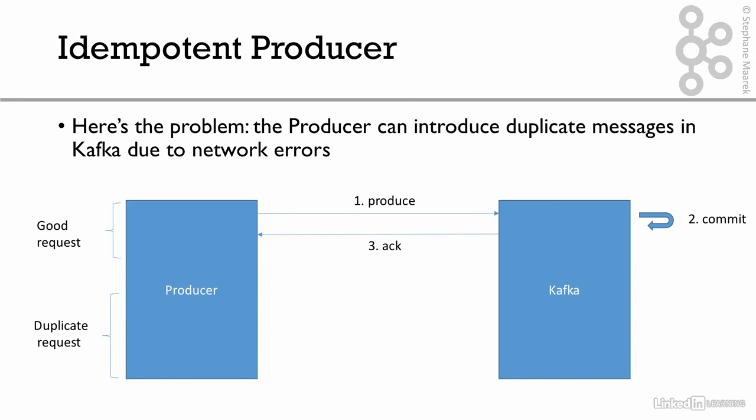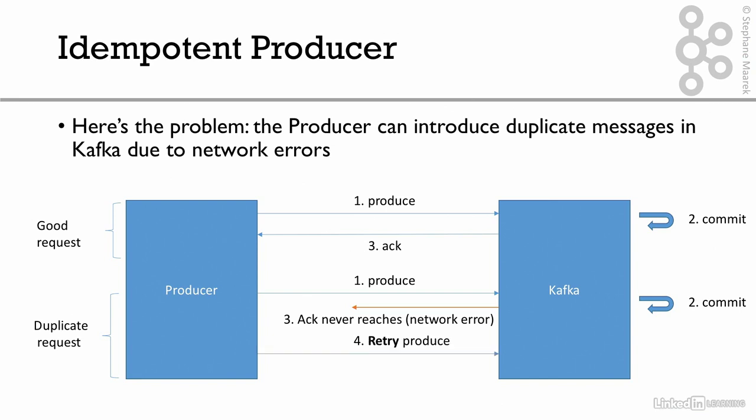But sometimes we get a duplicate request. The producer sends a produce request to Kafka, Kafka says it got the data and commits it in its log, and sends back an ACK — but the ACK never reaches the producer because there is a network error. So the producer retries, because retries is greater than zero and it hasn't received an ACK. It retries the produce request, and now there's a commit duplicate because Kafka sees the message again and commits it a second time. This time the ACK goes back to the producer. From the producer's perspective, it only sent the data once since it only got one ACK back. But from Kafka's perspective, it got the data twice and committed it twice — creating a duplicate.